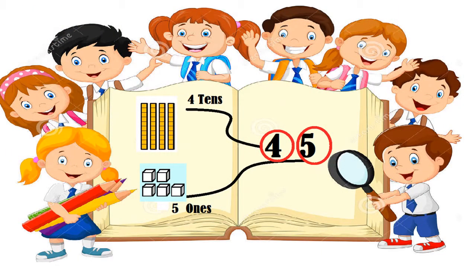To get 45, we need to start in the tens place. So here is 10, 20, 30, 40. Now we have 4 in the tens place. But we still need the blocks for the ones place, so we need 5 of the ones blocks.